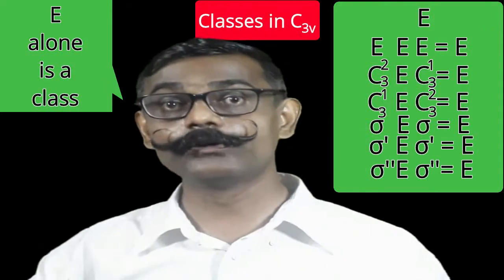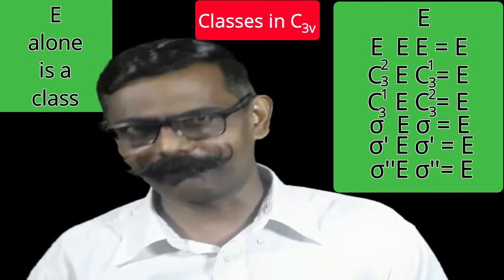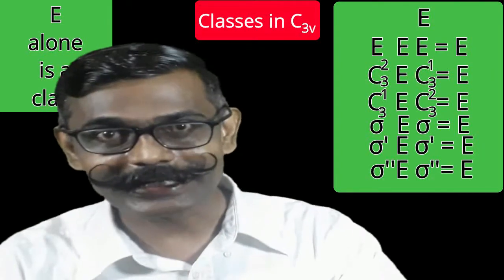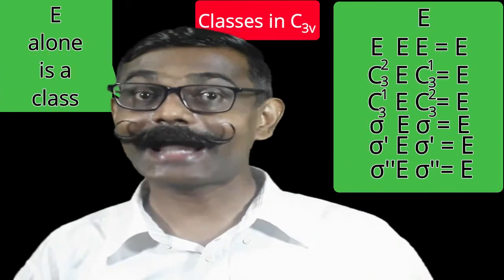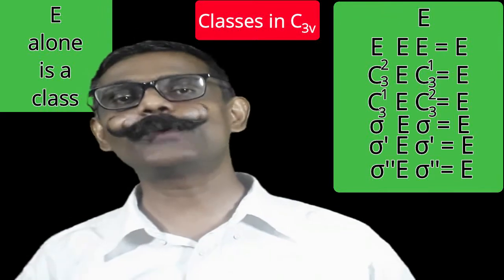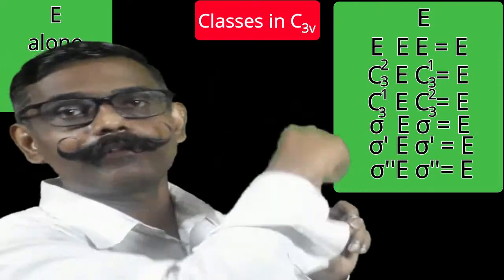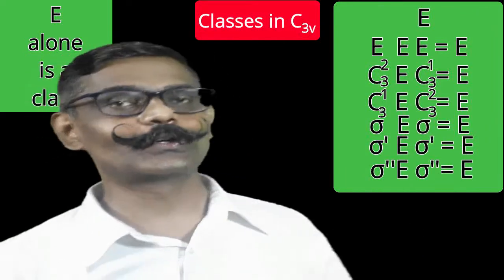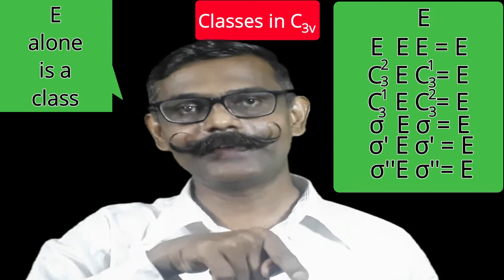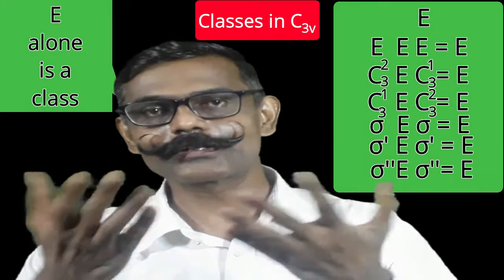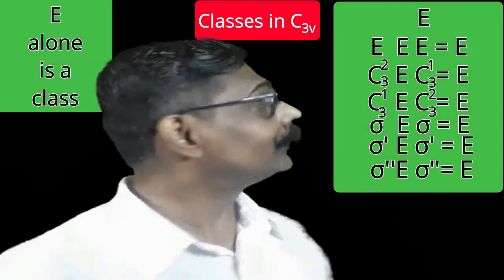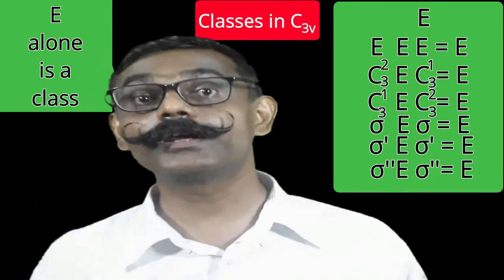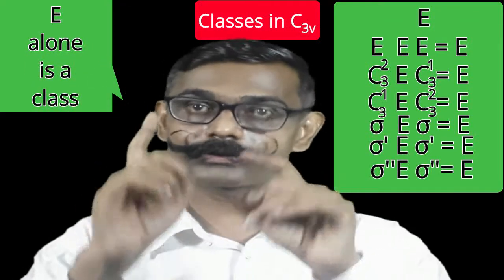Rotation by 240° corresponds to the operation C3². So x⁻¹ = C3². Therefore: C3² × E × C3¹ = rotation by 240°, then no change, then rotation by 120° — total 360°, giving back the original structure. Identity is a similarity transform of identity; identity is the only member in its class.